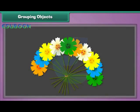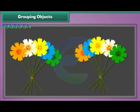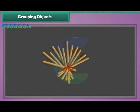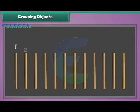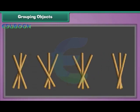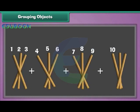Grouping objects. Look at this bunch of flowers — there are ten flowers in the bunch. We can make two groups, each consisting of five flowers. Look at this bundle of sticks. There are twelve sticks in the bundle. To make four groups, each bundle will have three sticks. We can similarly group other objects.